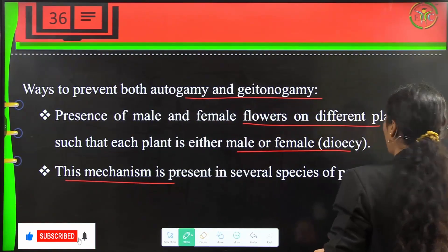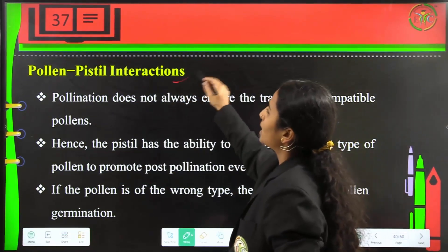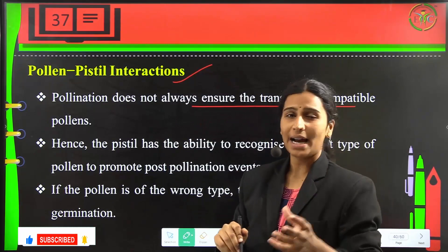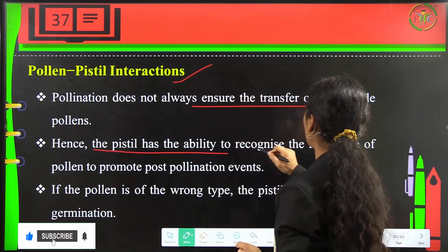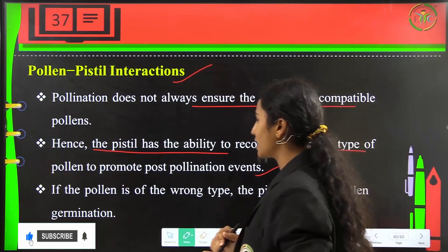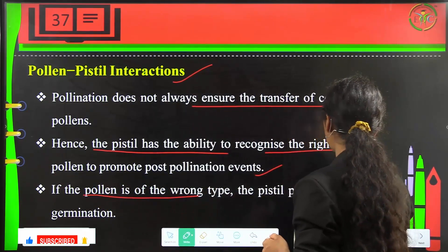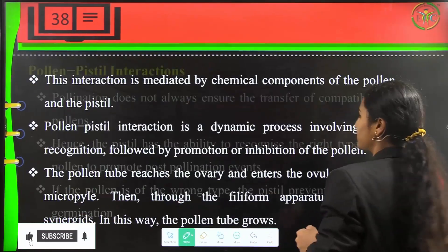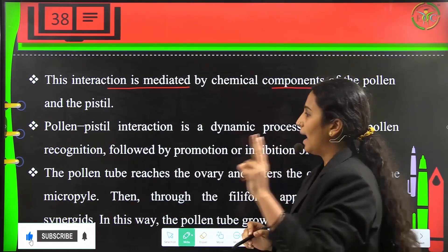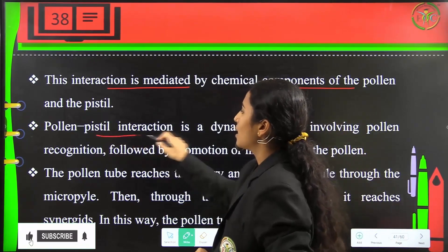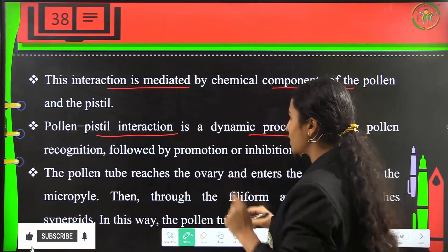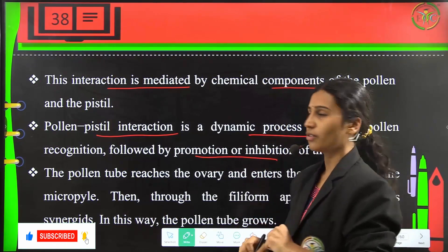This mechanism is present in several species of papaya. In pollen-pistil interaction, pollination does not always ensure transfer of compatible pollen. The pistil has the ability to recognize the right type of pollen and promote post-pollination events. If the pollen is of the wrong type, the pistil will prevent pollen germination. This interaction is mediated by chemical components of the pollen and the pistil, involving pollen recognition followed by promotion or inhibition of the pollen.